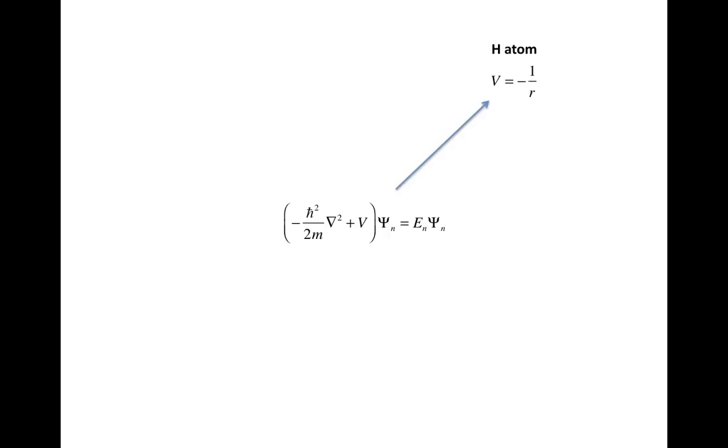So for example, if you set V equal to Coulomb's law, so this would be the attraction between two oppositely charged particles, which is just one over R in certain units, then you get the hydrogen atom. So this is the attraction of the electron to the nucleus, and you treat the electron as this wave particle.